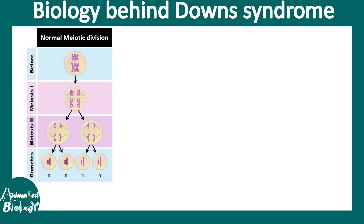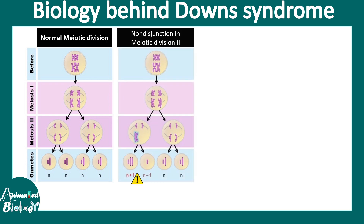Now let's talk about the biology behind Down syndrome. This is how a normal meiotic division looks. Each daughter cell has equal segregation of chromosomes. But there is a process — a mistake rather — known as non-disjunction, which happens in meiotic division 2, due to which the segregation is not equal. One particular gamete gets an extra copy and another gets a lesser copy, and this non-disjunction is the key cause of Down syndrome.